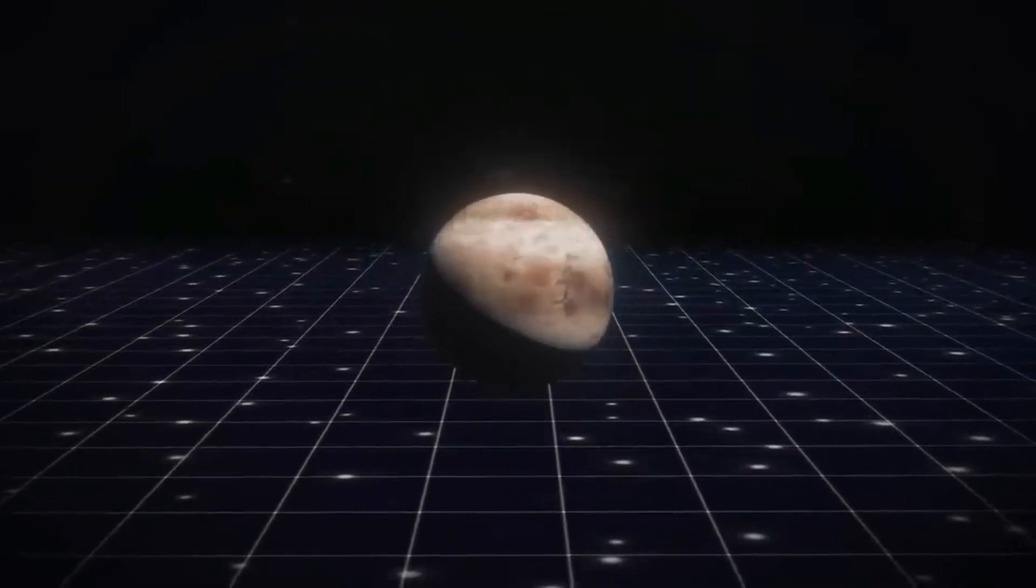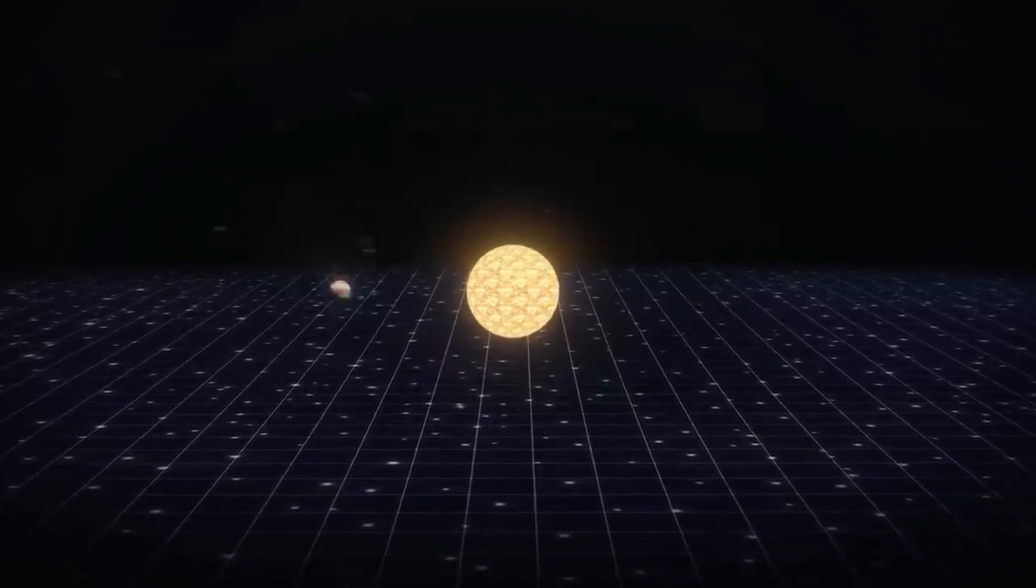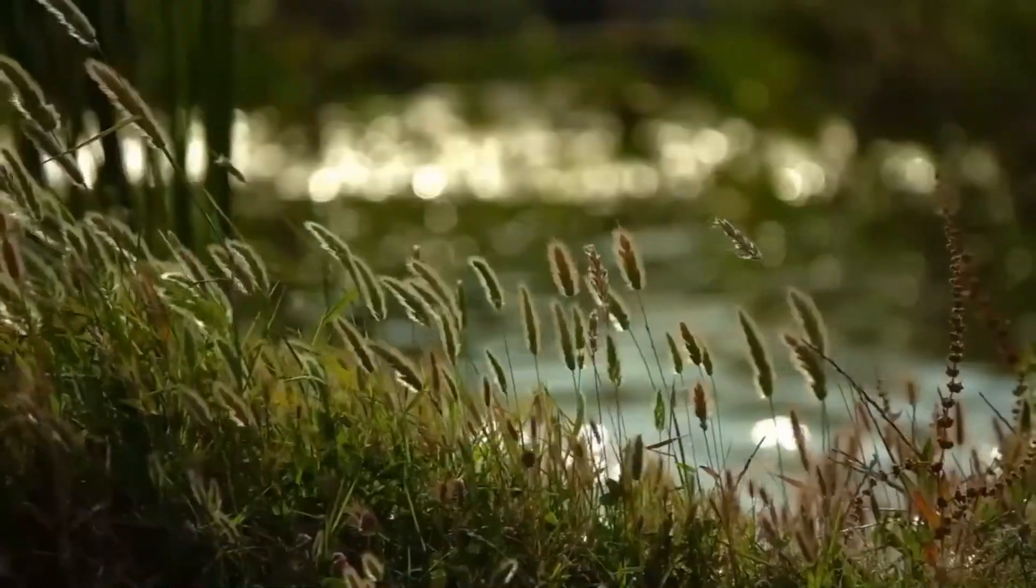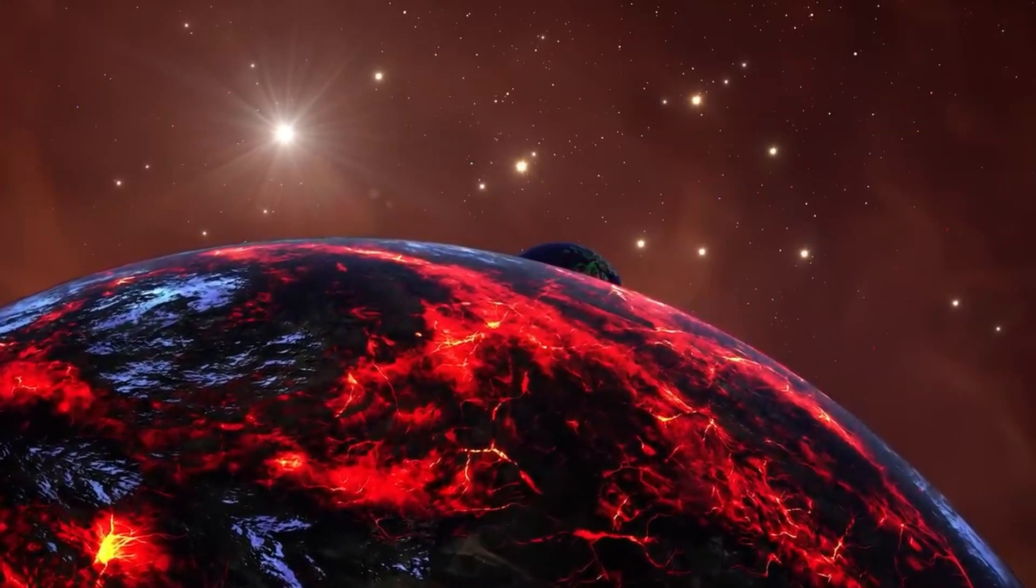Exoplanets are worlds that orbit stars other than our Sun. There are countless stars out there beyond our own. These planets come in many different forms, from beautiful Earth-like places to harsh worlds called Hell Planets because of their extreme landscapes.